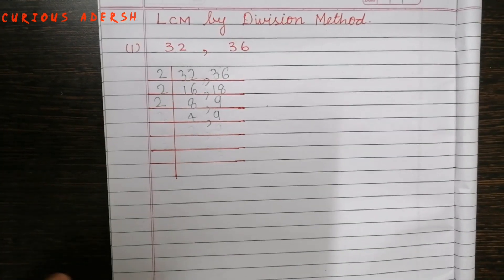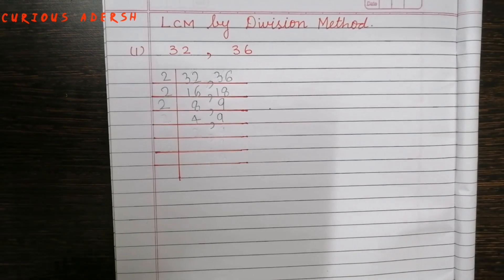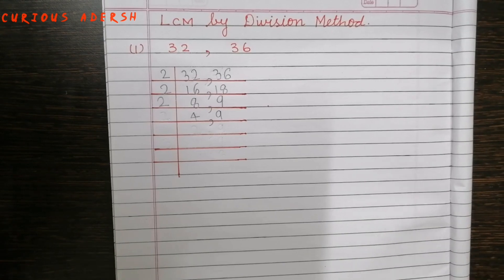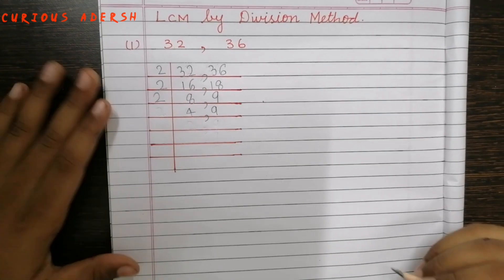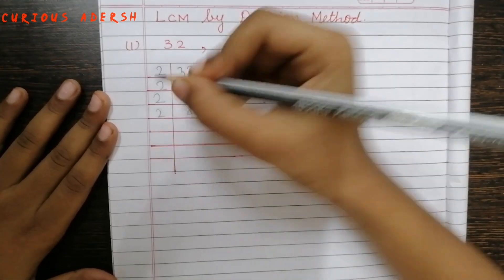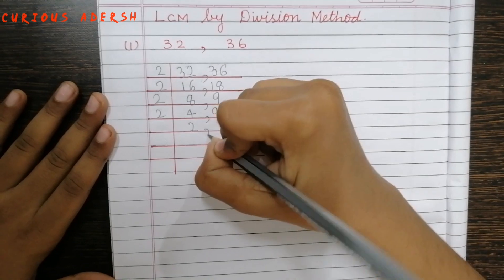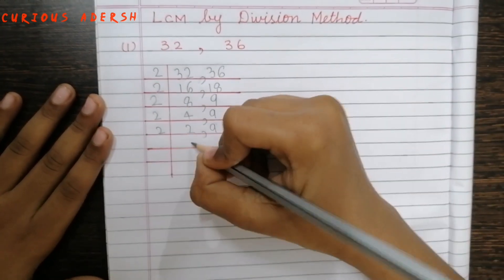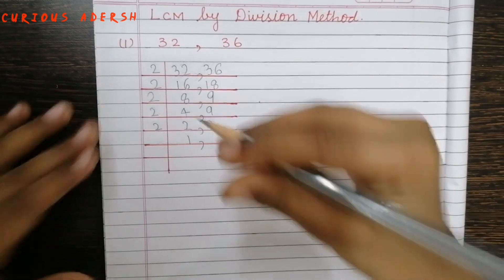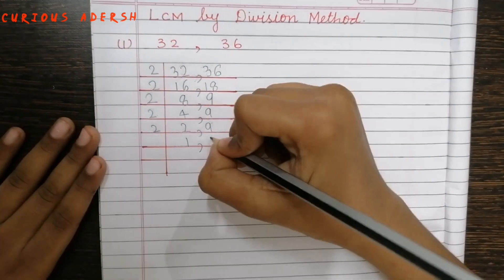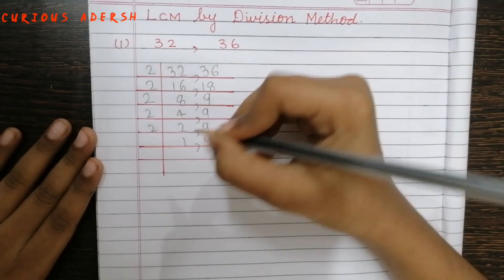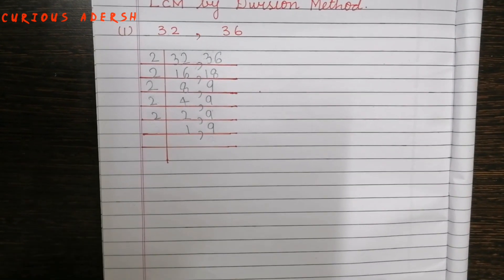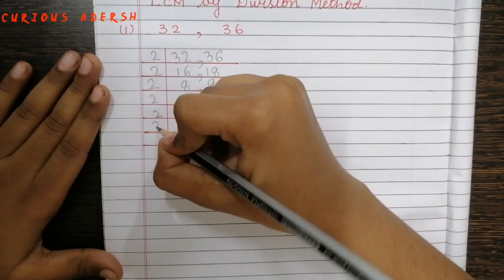4 is divisible by 2, but 9 is not divisible by 2, so we'll divide 4 and write 9 as it is. 9 is divisible by 3, so we'll write 3 here.